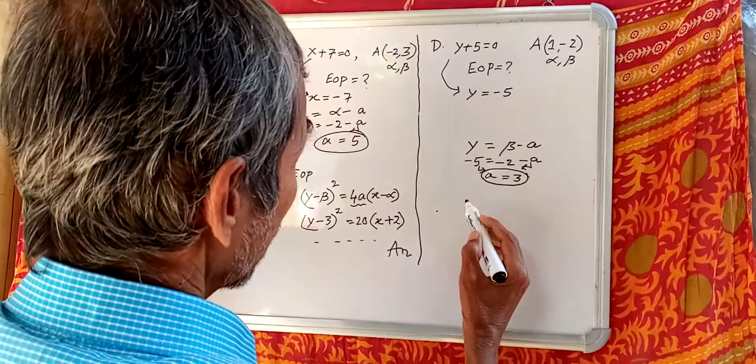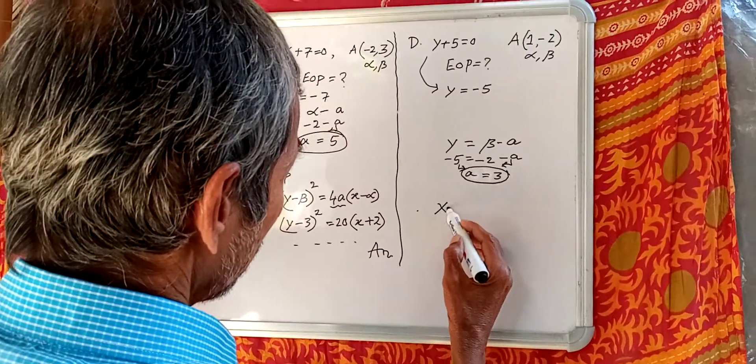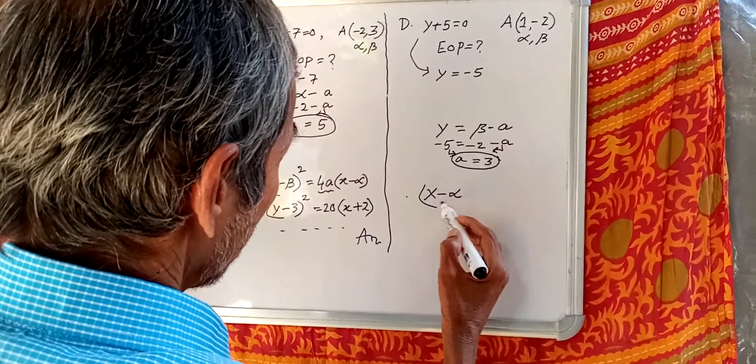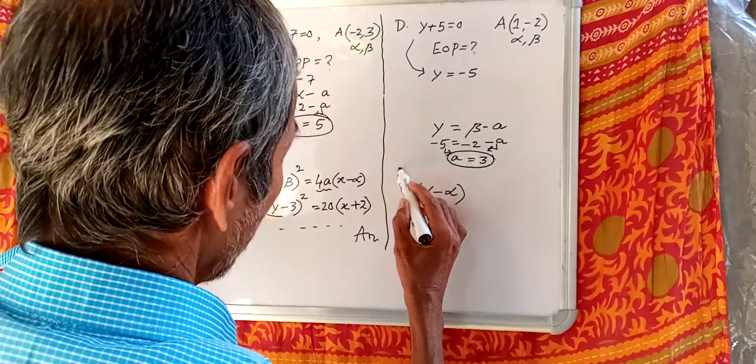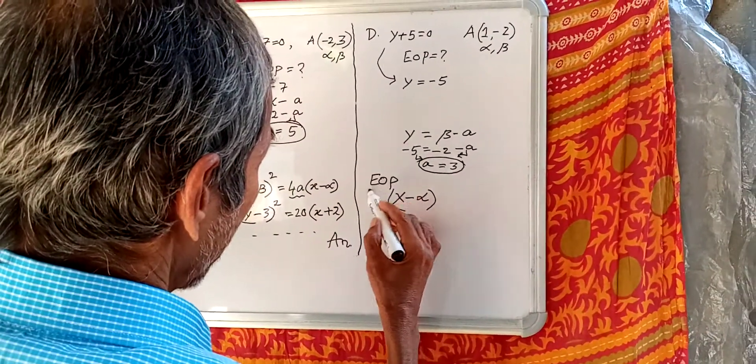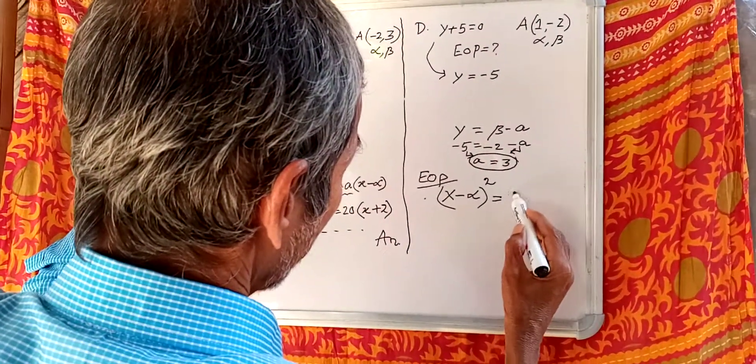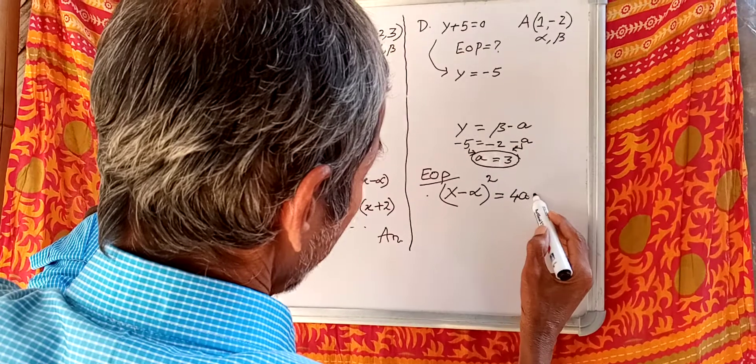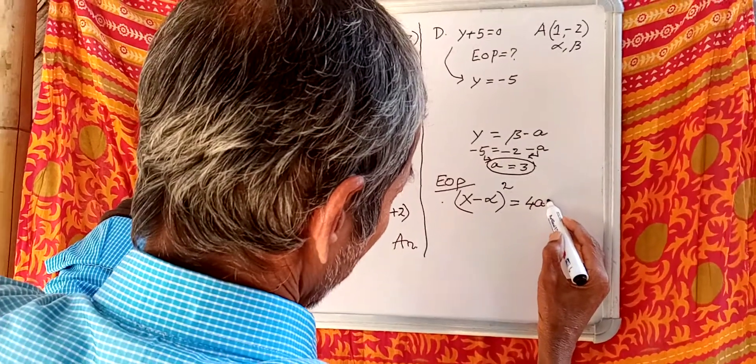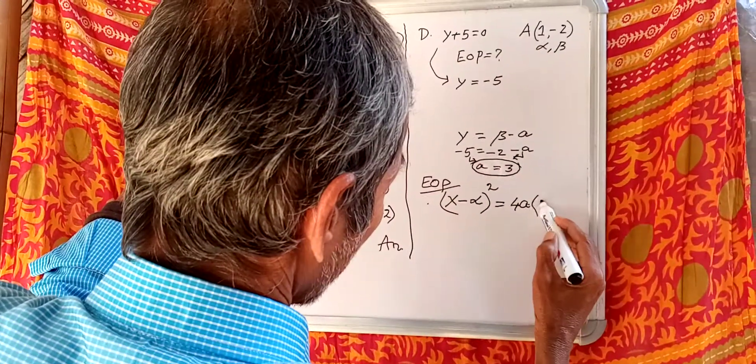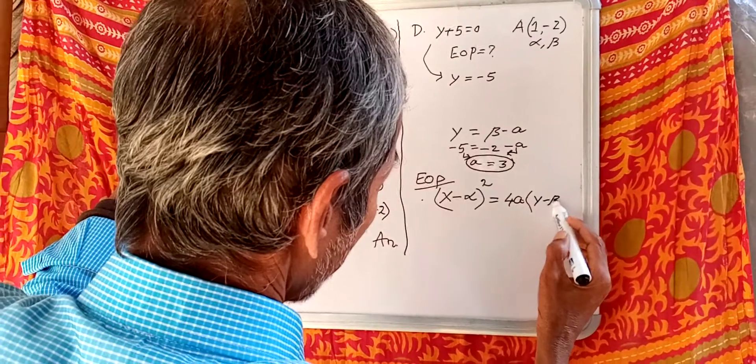Here, equation of parabola: X minus alpha whole square equals 4A, Y minus beta.